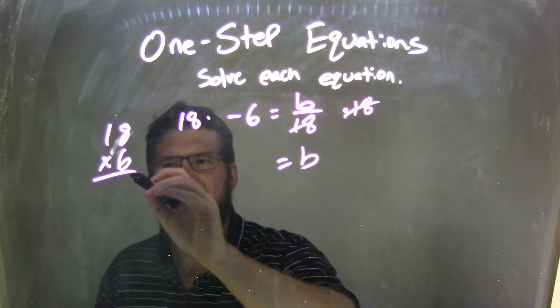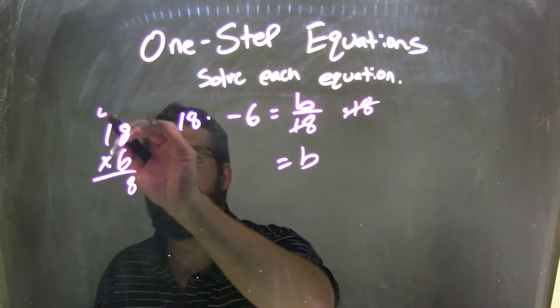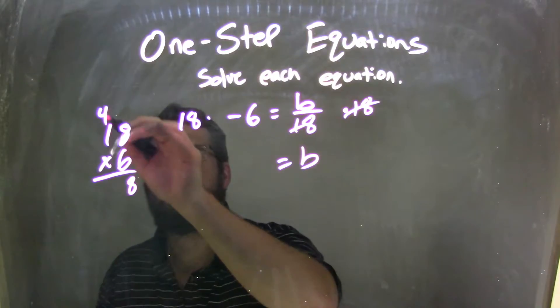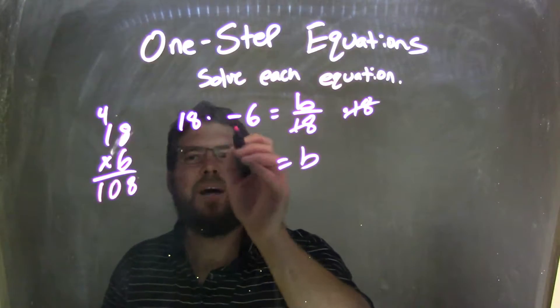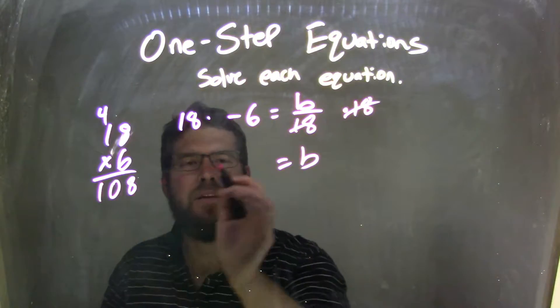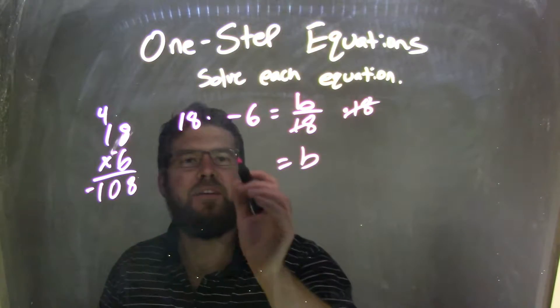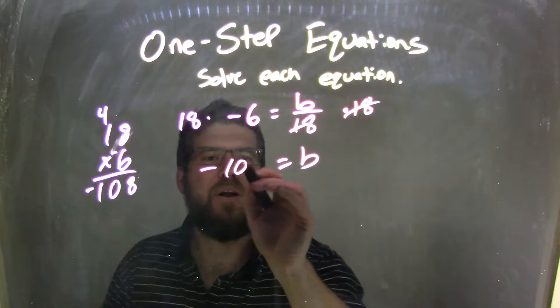Well, what's 6 times 8? 6 times 8 is 48, carry the 4. 6 times 1 is 6, plus 4 is 10, so we have 108. So 18 times a negative 6, we know it's going to be negative, right? Negative times a positive is negative, so we have a negative 108 here.